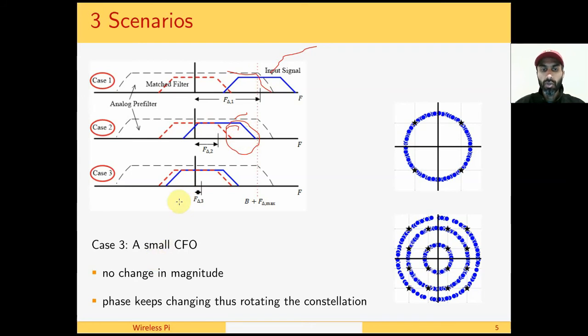So for example if the CFO is small, which is case 3, then there is no change in magnitude and just like the phase rotated the constellation, a frequency offset keeps rotating the constellation which means the constellation is spinning in a circle. This is an example for a 4-QAM system and this is an example for a 16-QAM system.